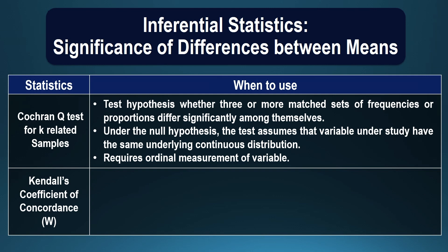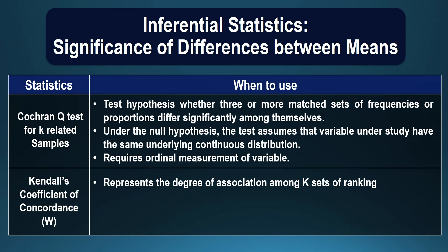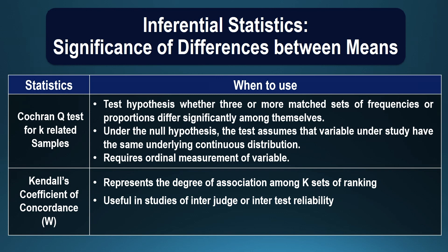Kendall's coefficient of concordance can be used to represent the degree of association among k sets of rankings. For example, if three different judges have independently ranked a sample on some variable, you can find out the degree of agreement among the three judges with respect to the rankings given. These are some of the inferential statistical techniques which can be used; for further analysis one can go for advanced techniques like factor analysis, multiple regression, path analysis, or structural equation modeling.